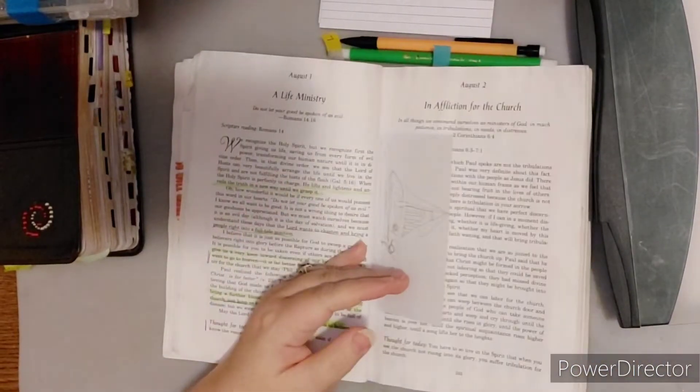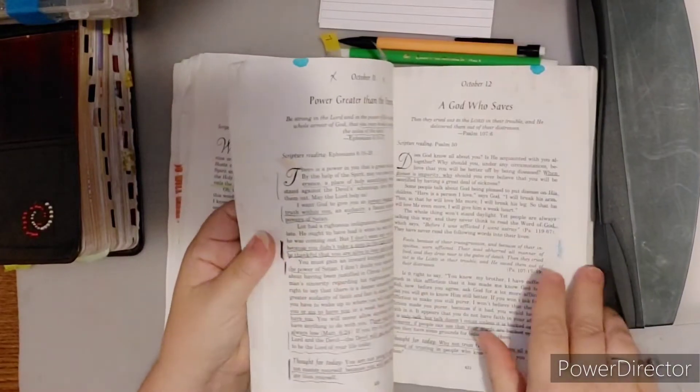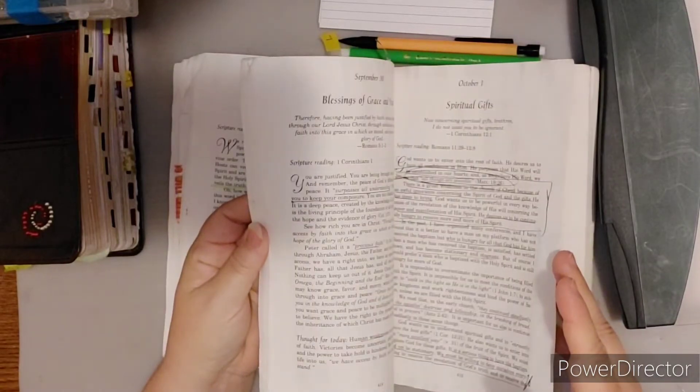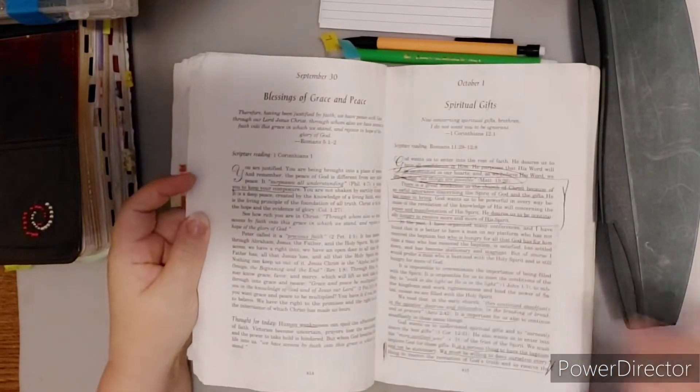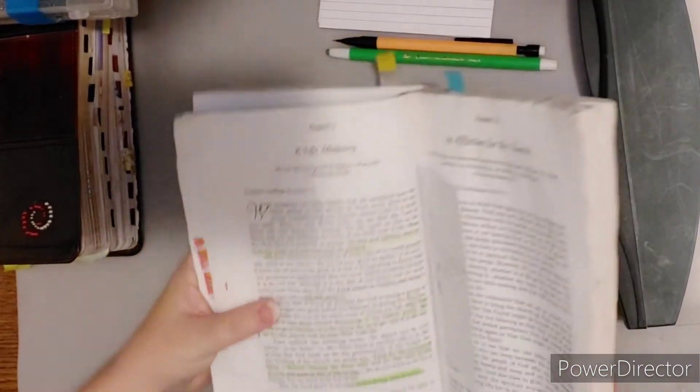And then for August, this book has, I think, 31 of every day, every month, I do believe. Let me see real quick. Yeah, it has 31, so every month has 31, from my understanding, I think. Let me check. No, September. Okay, so some do, some don't. Alright, so I guess it's based on the month.